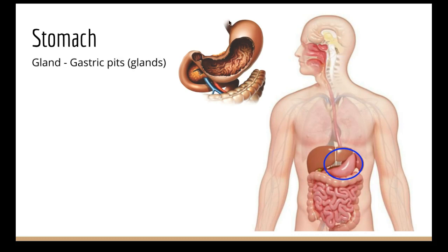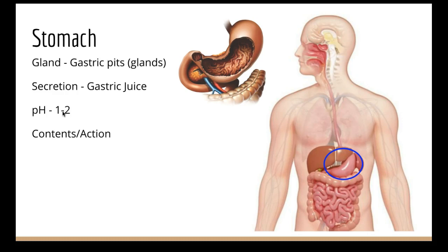On the walls of the stomach there are things called gastric pits, which are like glands, and they release gastric juice that is super acidic — it has a pH of 1 to 2. This is the only place in the body that's not neutral or a little bit basic.